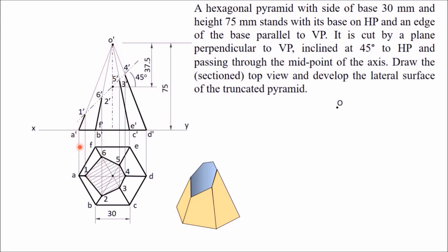In the front view, O'A' is a line whose top view OA is parallel to the XY line. Therefore, O'A' is the true length of the slant edge — this is the slant height. Take this length from O' to A', set it as the radius, and draw an arc.